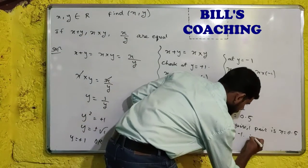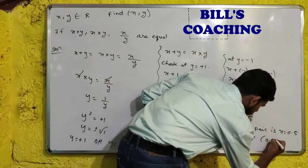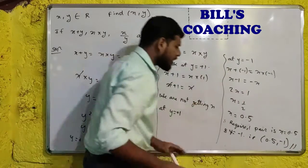Y is equal to minus 1. And in coordinate form, we can write it as, that is, we can write 0.5 comma minus 1. And this is an answer.